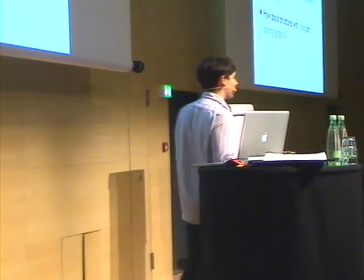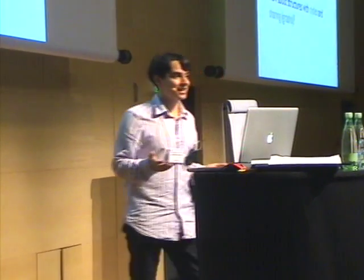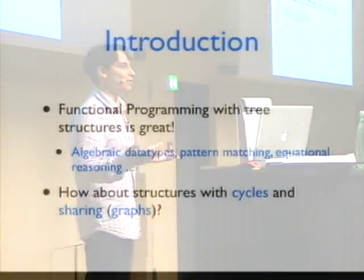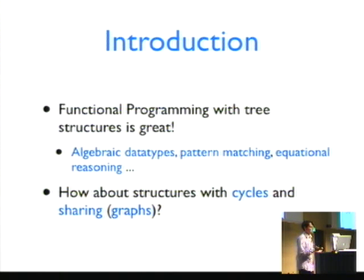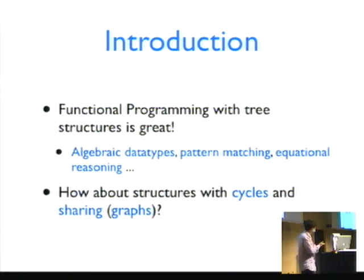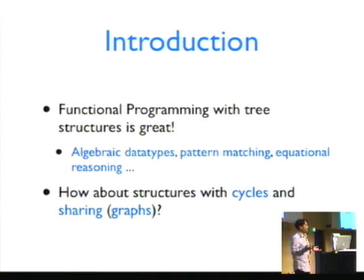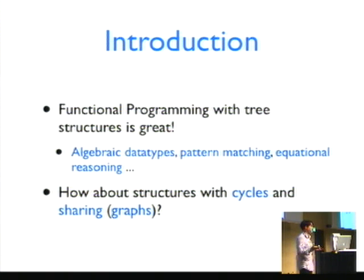We are all functional programmers in this audience, so we know that functional programming is great to program with trees. You have algebraic data types, you have pattern matching, you have equational reasoning, so with equational reasoning you can just reason about your functions using algebraic data types and pattern matching — all of this is great. But what happens if you need to use data structures that have cycles and sharing, essentially graph structures?